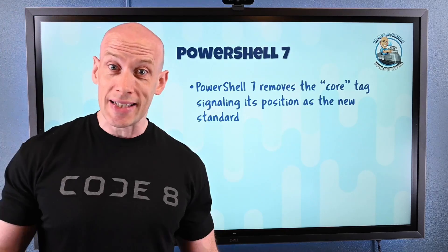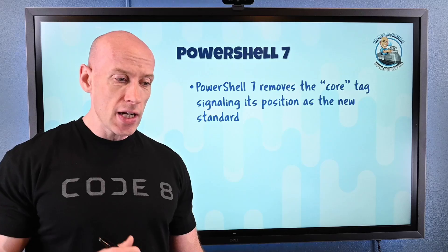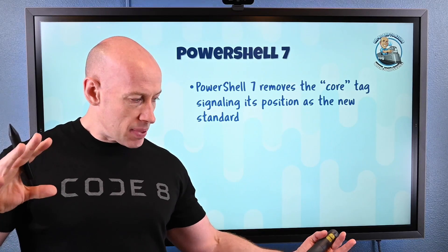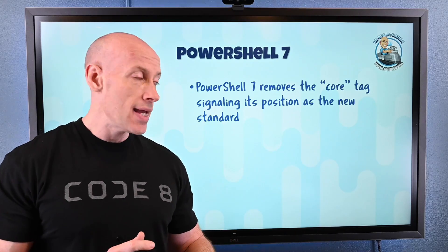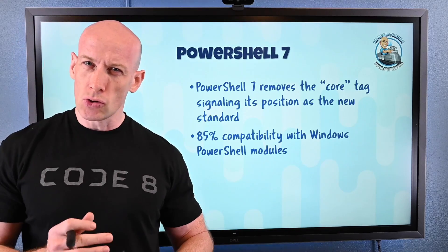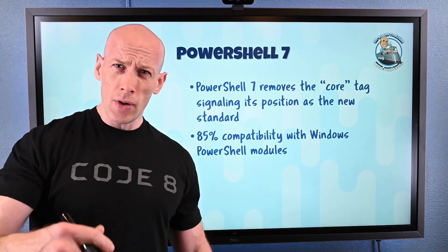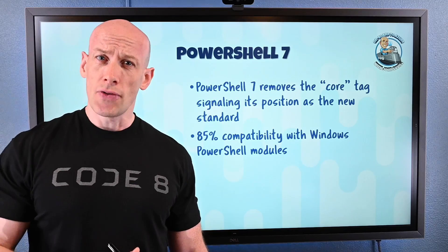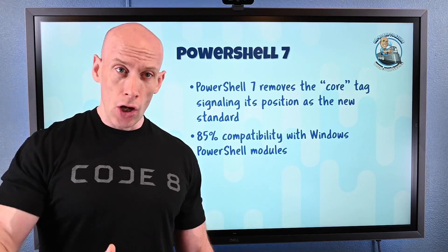PowerShell 7 was released. You'll notice it's not PowerShell Core anymore — it's just PowerShell 7. This really stresses the idea that it now positions itself as the core, the primary version to use. It now has 85% compatibility for the modules of Windows PowerShell. Windows PowerShell was fantastic, very mature, with great functionality, but this is the future. So if you haven't already, PowerShell 7 is now released — go get it and start learning it.